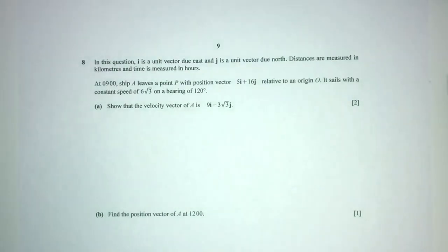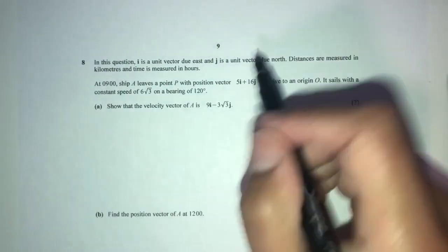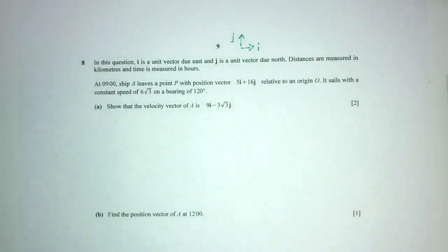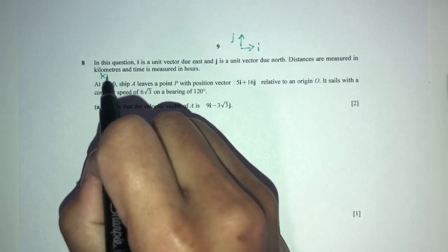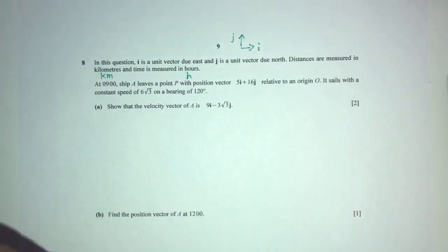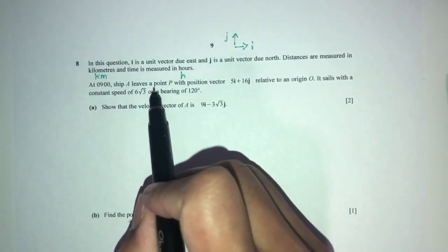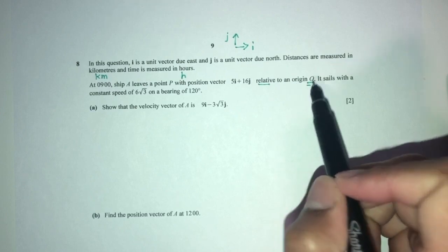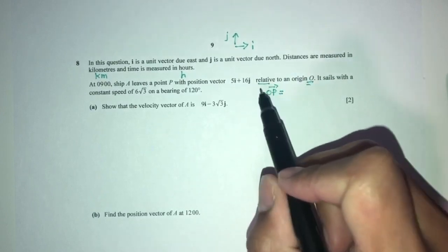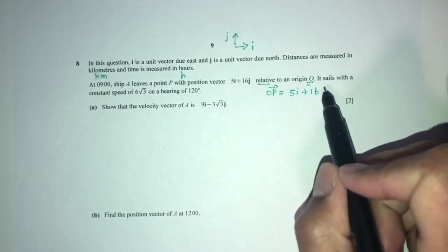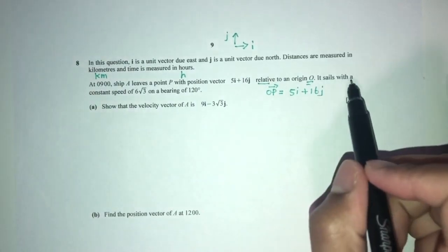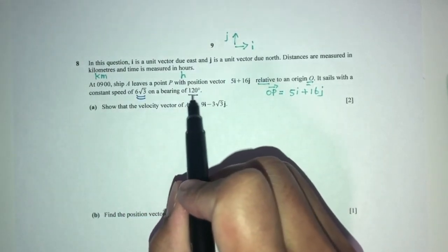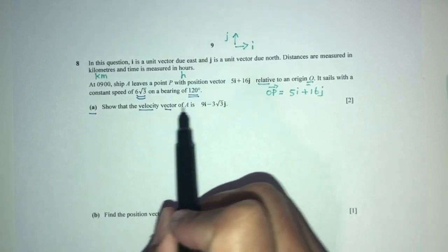Question 8: unit vector i is in the due west direction, and j is due north. Distances are in km, time in hours. At 9am, ship A leaves a point with position vector 5i plus 16j and sails at constant speed of 6 root 3 on a bearing of 120 degrees. We need to show the velocity vector of A is 9i minus 3 root 3 j.